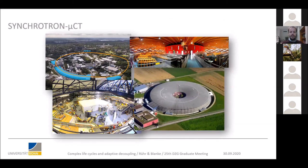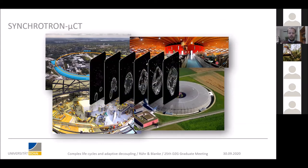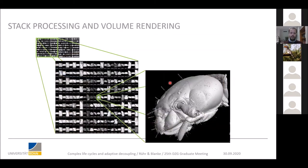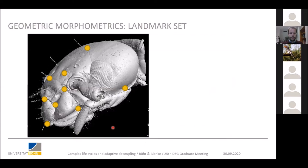We carried all these specimens to particle accelerators across Europe, where we used synchrotron radiation from giant storage rings and sent it through our specimens. By this we achieved high-throughput, high-resolution micro-computed tomography. We got image stacks of the inner and outer morphology and created three-dimensional renderings from them. For example, we can see an earwig head with the eyes and mandibles. Then I placed anatomical reference points — also called landmarks — on all of these heads at the same positions, for example at the mandible joints or where head sutures meet, in order to quantify head shape variation in earwigs and stoneflies.